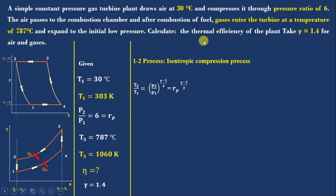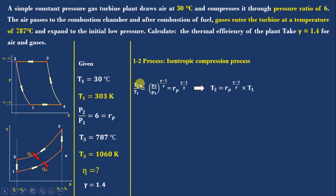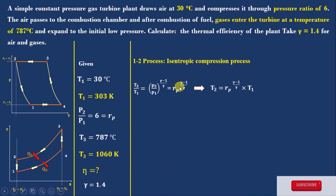Now we look at process 1-2, isentropic compression. From the isentropic relation: T2/T1 = (P2/P1)^((gamma-1)/gamma). Since P2/P1 = RP, this equation becomes: T2 = RP^((gamma-1)/gamma) × T1.